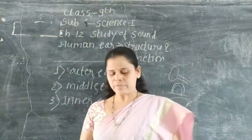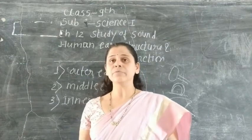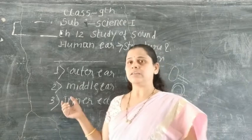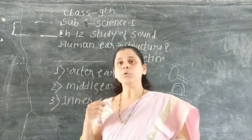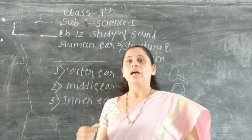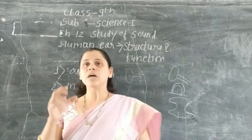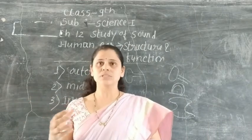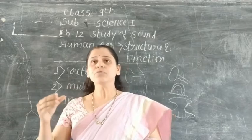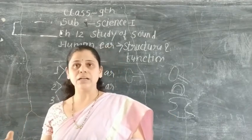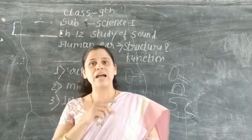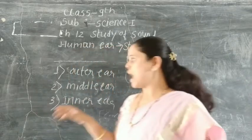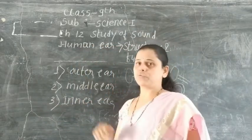We know very well the ear is a very important sensory organ, and using this ear we are able to hear sound. When a sound is produced through any source, because of the vibration of the air particles, we are able to hear that particular sound. So let's have an overview of the structure of the human ear.